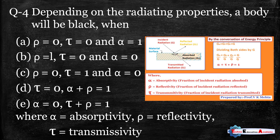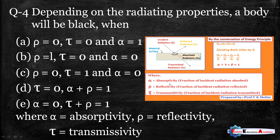Question number four: depending on the radiation properties, a body will be black when — a black body absorbs all the radiation falling on its surface. Alpha is absorptivity, the fraction of incident radiation absorbed. In a black body, all incident radiation is absorbed by the body, so alpha equals one, transmissivity is zero, and reflectivity is also zero. The right answer is option A.